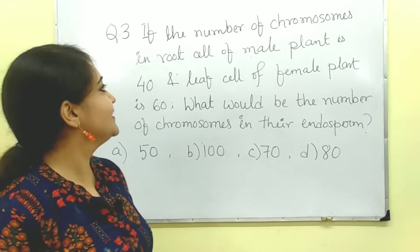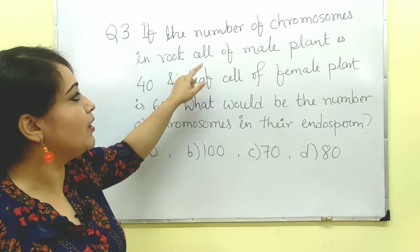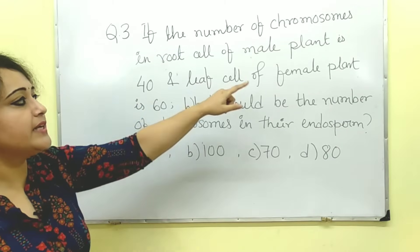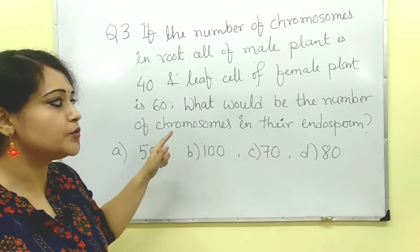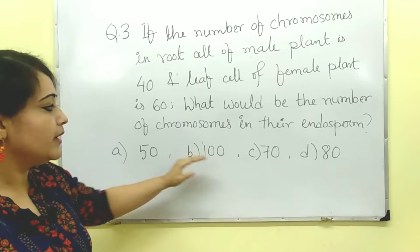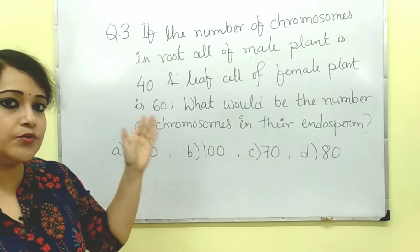Question number 3. If the number of chromosomes in root cell of a male plant is 40 and the leaf cell of a female plant is 60, what would be the number of chromosomes in their endosperm? The options are 50, 100, 70, and 80. Please take a screenshot. From our previous discussion, we know endosperm is formed by fusion of male gamete with the central cell. The male gamete is haploid and the central cell is double that of the egg cell.